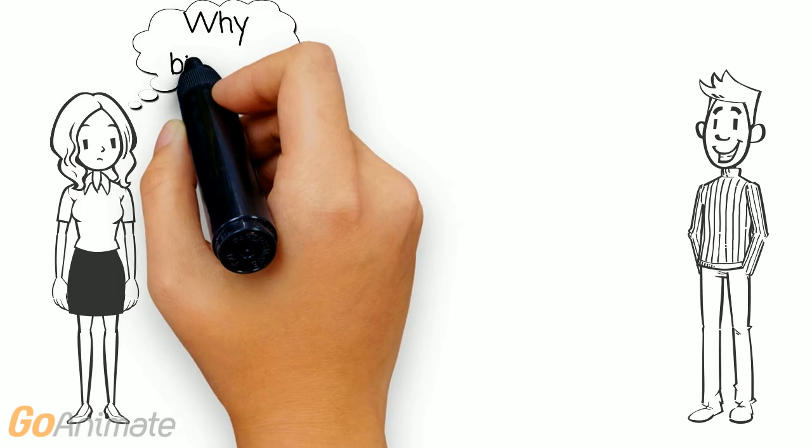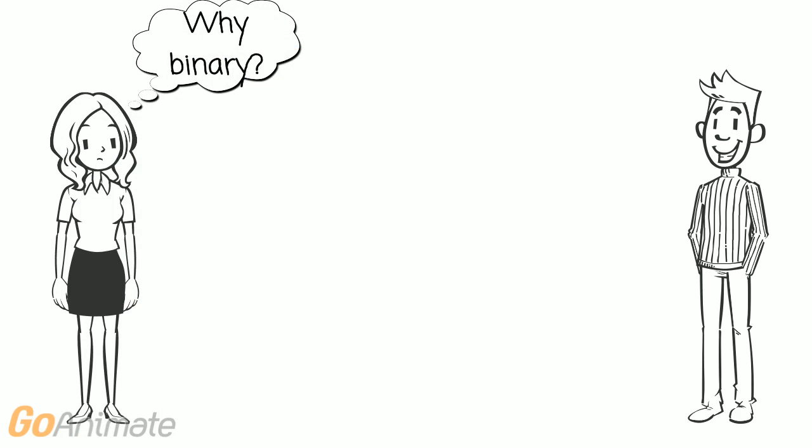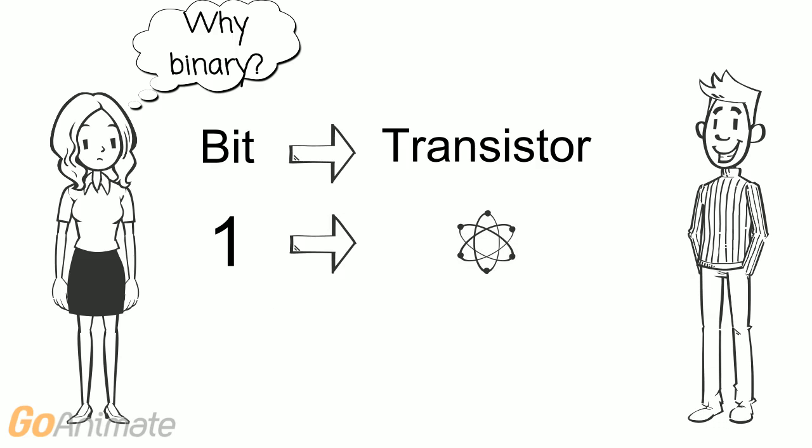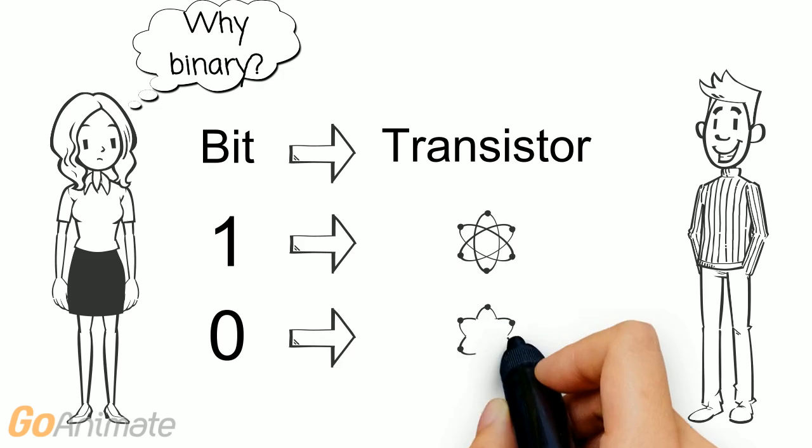Of course, you may be wondering why computers use binary rather than decimal. It actually has to do with the computer's hardware. A bit is a digital representation of a type of physical object found in a computer called a transistor. A transistor contains a switch that either allows or prevents electricity from flowing through it. A bit that is set to 1 indicates that transistor is allowing electricity to flow. A bit that is set to 0 indicates that transistor is not.